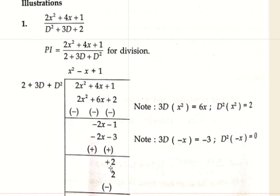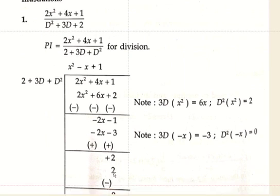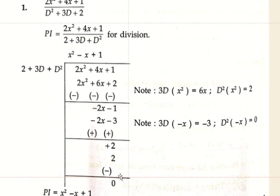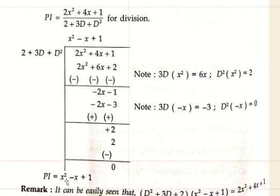Now take the first term 2 divided by the first term 2: 2/2 = 1. Write 1 in the quotient and multiply all terms by 1. So: 2·1 = 2; 3D·1 = 0 (differentiation of constant is 0); D²·1 = 0. Subtract: 2 − 2 = 0. The remainder is zero. The quotient is x² − x + 1, which is the particular integral.